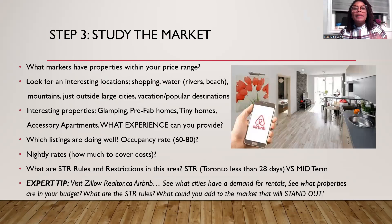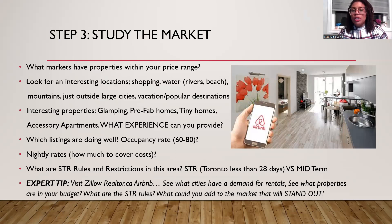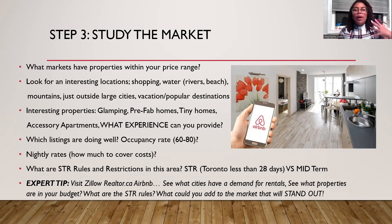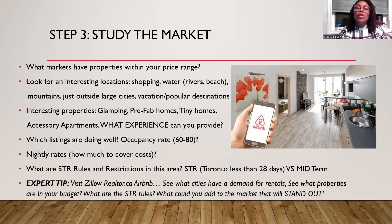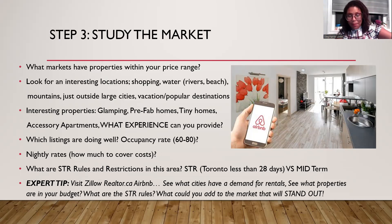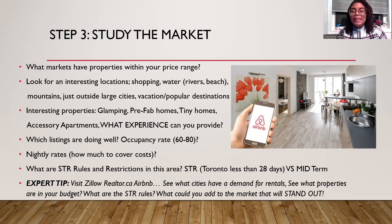Step three is to study and understand the market. What markets have properties within your price range? Look for interesting locations — shopping plazas, weekend trip destinations, beaches, rivers, waterfalls, mountains, and just outside larger cities. Think about what interesting properties you could purchase — insert your creativity. Maybe you love camping and can create amazing glamping experiences others wouldn't even think of. Also consider prefab homes, tiny homes, or adding a second structure on a large lot.